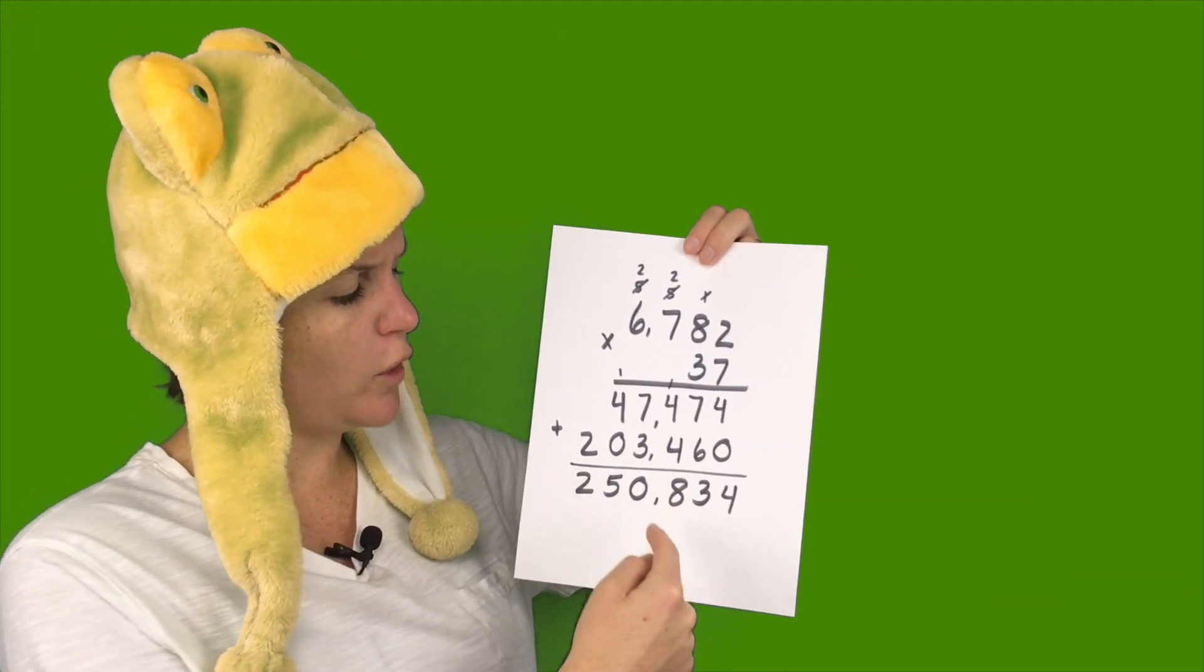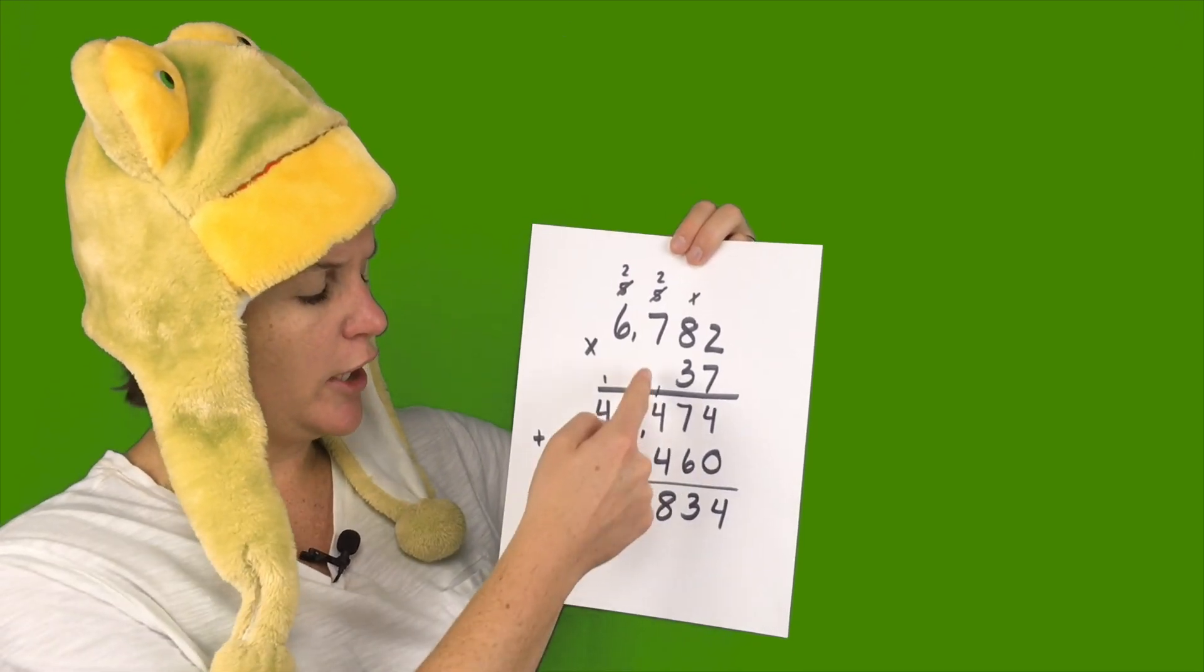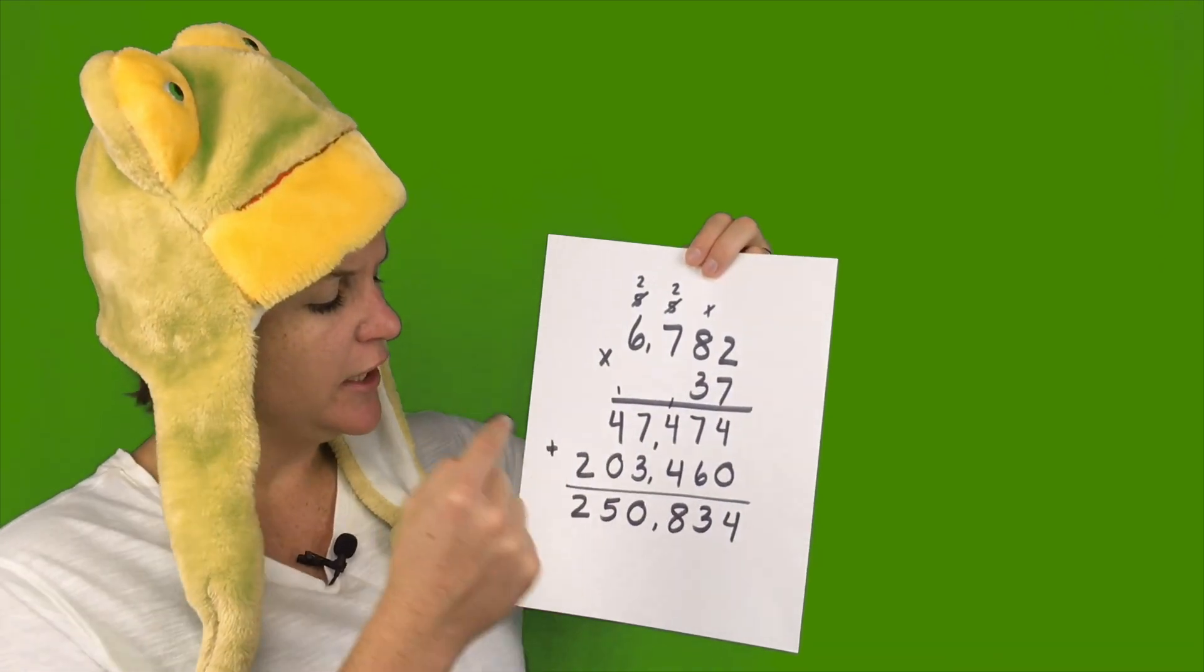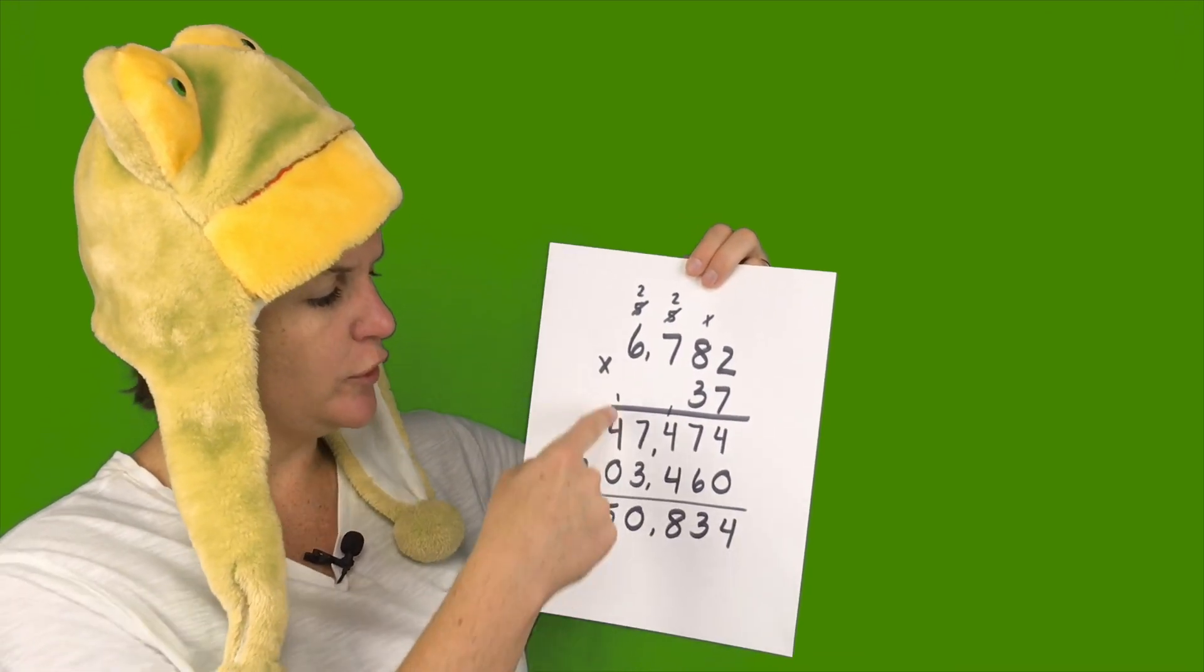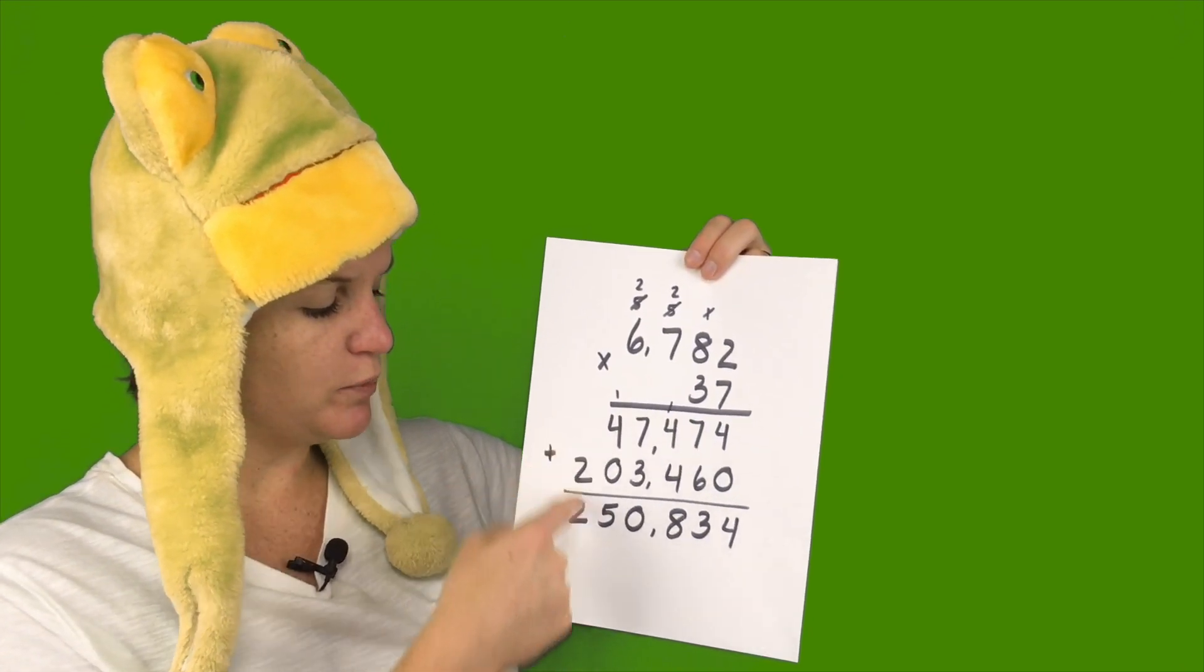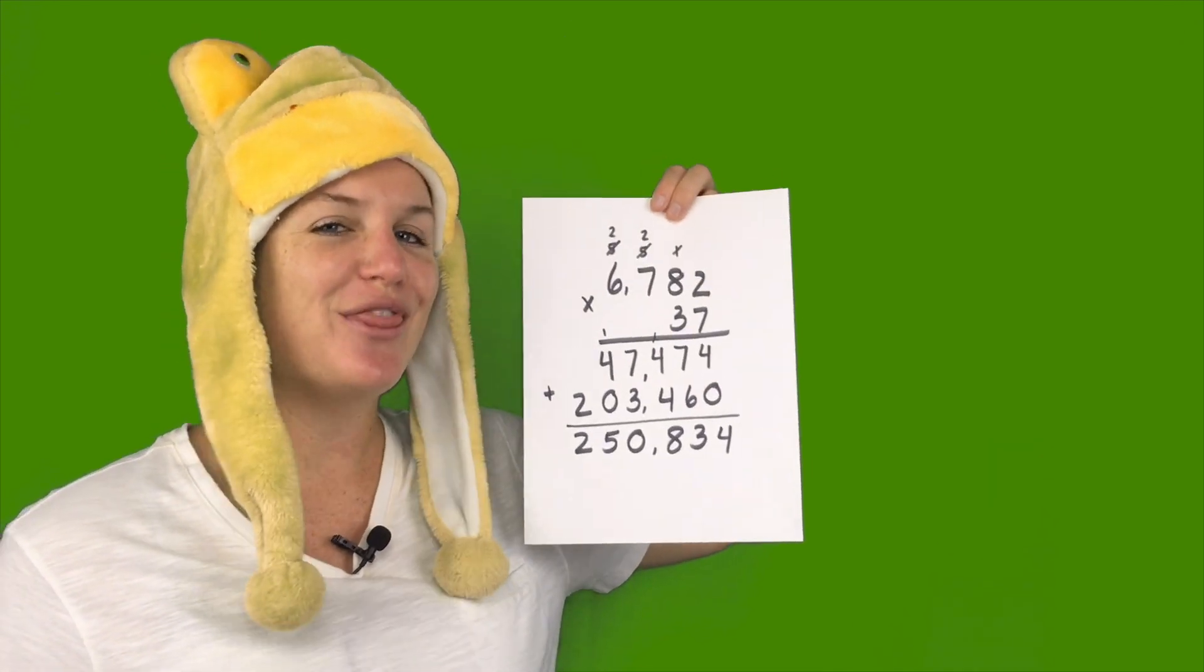4 plus 0 is 4. 7 plus 6 is 13. Carry your 1. And then 4 plus 4 is 8. 7 plus 3 is 10. Carry your 1. Don't forget to add up here. 1 plus 4 is 5. And then bring down your 2. So 250,834.